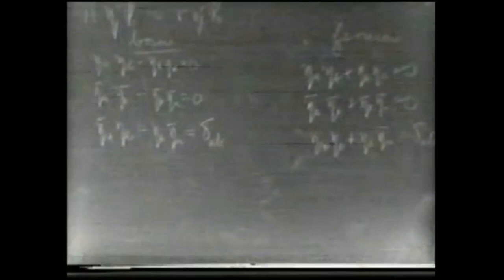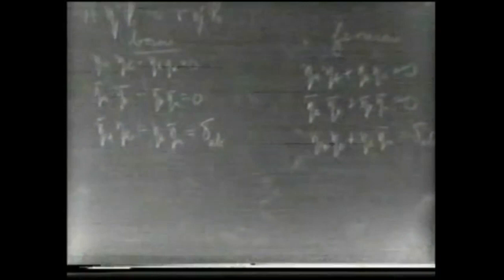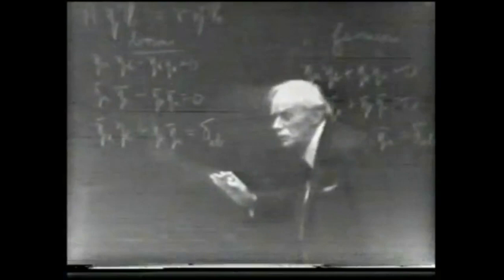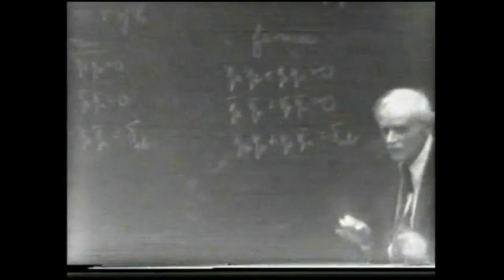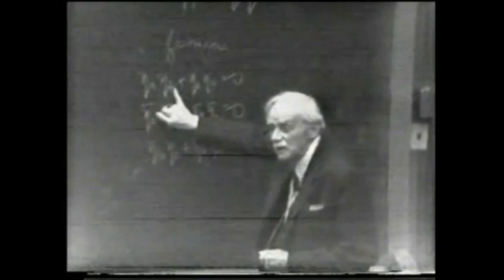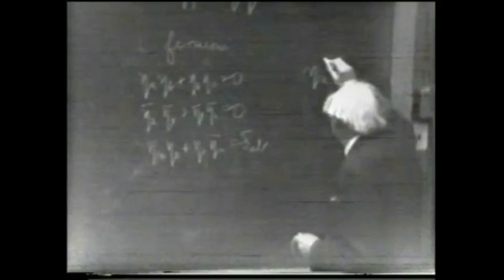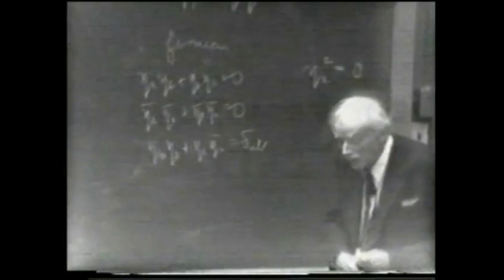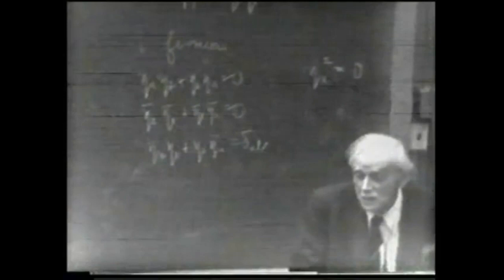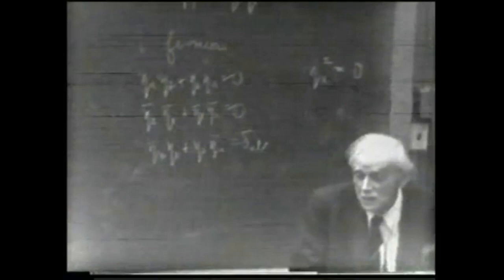I don't have time to go into the details of the development of this theory of fermions, but I'll just show what the result is. We again have these η and η-bar operators associated with each fermion state, but the η's and η-bars now satisfy different commutation relations. Instead of the equations which apply to bosons, we have these equations which apply to fermions: ηₐ·ηᵦ + ηᵦ·ηₐ = 0; η-barₐ·η-barᵦ + η-barᵦ·η-barₐ = 0; and η-barₐ·ηᵦ + ηᵦ·η-barₐ = δₐᵦ — just the same equations except that we have plus signs instead of minus signs.